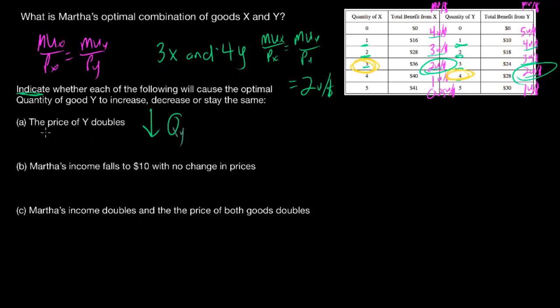Second: Martha's income falls to $10 with no change in prices. Income is a determinant of demand. If her income falls, she can afford less of both goods, so the quantity of good Y demanded will also fall. Third: Martha's income doubles and the price of both goods doubles. Assuming no change in marginal utilities, her real income remains the same — the prices relative to one another haven't changed — so her optimal combination will stay the same.